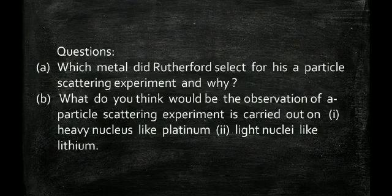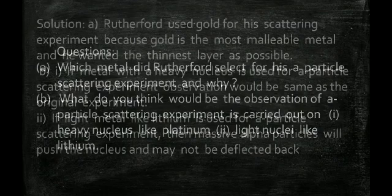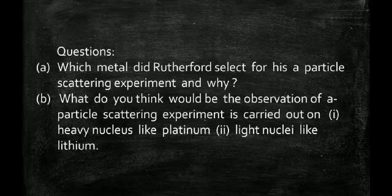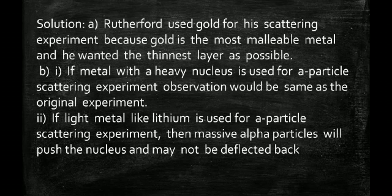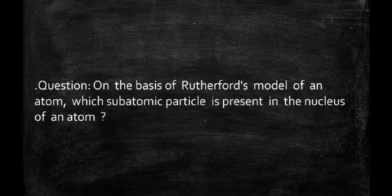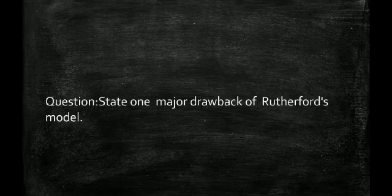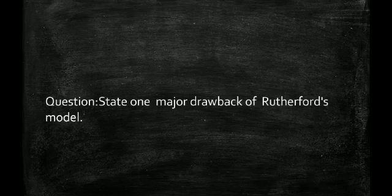In the Rutherford experiment, gold metal was used because it is the most malleable. If a heavy nucleus were used, results would be similar; if a lighter nucleus were used, it would deflect back more easily and not give the same results. Based on the Rutherford model, the only subatomic particle known inside the nucleus at that time was the proton. So in an atom: the nucleus contains protons (positive charge) and electrons (negative charge) revolve outside the nucleus.